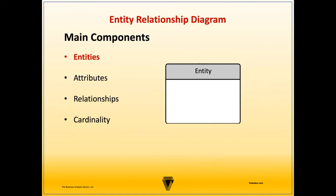All entities within the model are tracked and have a relationship to other entities. When determining the entities that should be included in the ERD, you can use the noun technique — reviewing specifications, a glossary, or business rules for a specific domain or system, and then extracting all of the nouns that are relevant to the project. The entity symbol includes the entity name and description. When naming entities, the label should always be written as nouns — for example, 'book.'